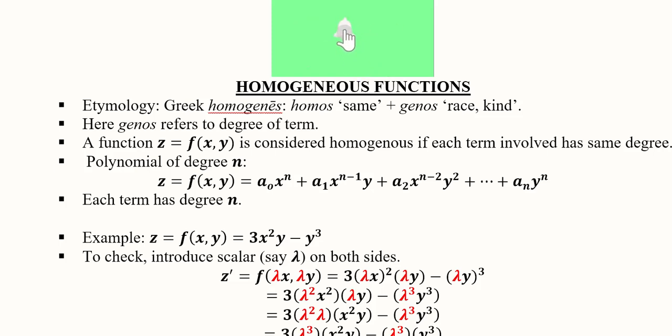This is how we find the homogeneity of a given function, which is useful in considering various economic concepts like returns to scale in the production function that we will see in the remaining lectures. But this was basically an understanding of what homogeneous functions are mathematically speaking. Thank you.